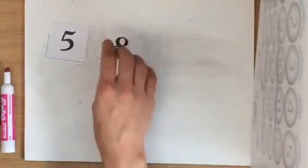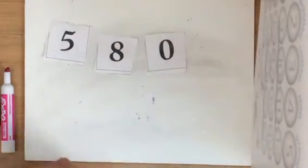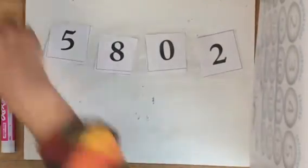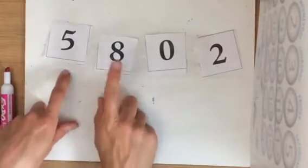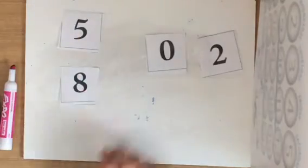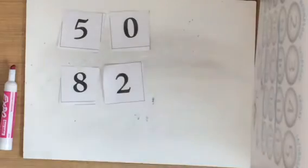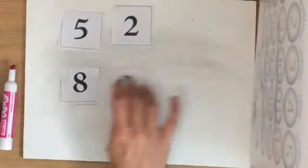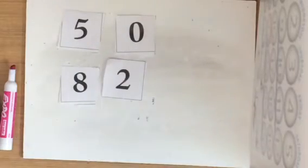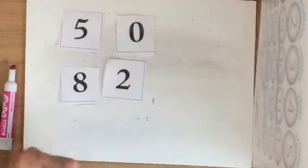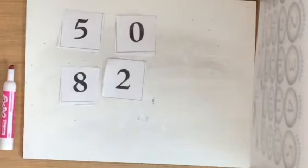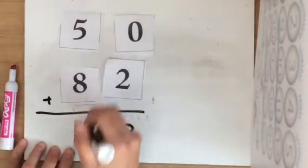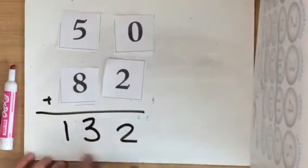Say I drew the numbers 5, 8, 0, and 2. I want to use these digits to create the largest sum possible. 5 and 8 are my biggest numbers, so I probably want them to go in my 10s place. 0 and 2 are my smallest numbers, so I probably want them to go in my 1s place. Again, if I'm creating my biggest sum, it doesn't matter if I have 52 or 50 and 82, because they're all going to get added together in the end. So 50 plus 82, 0 plus 2 equals 2. 5 plus 8 equals 13. So my answer is 132.